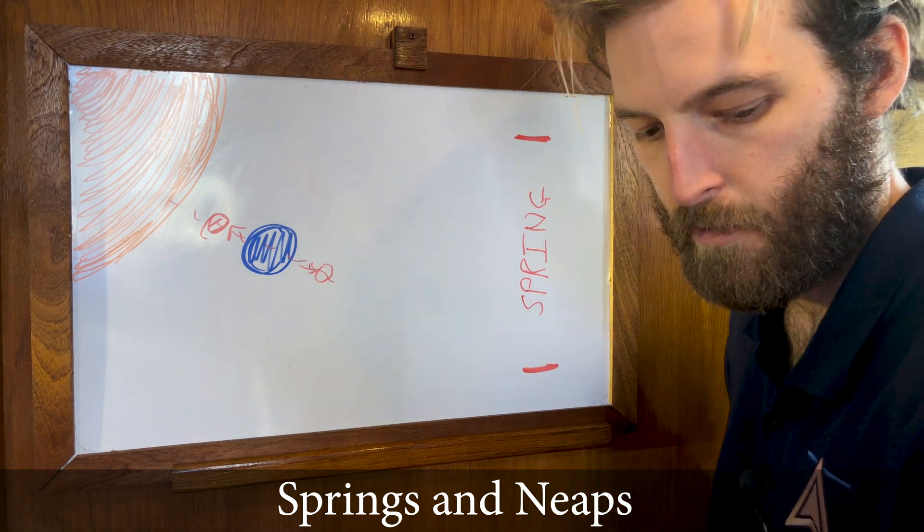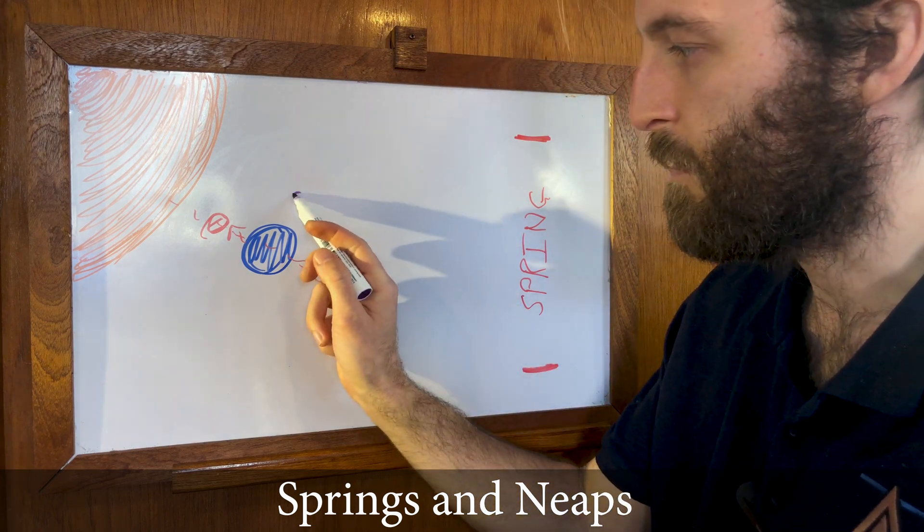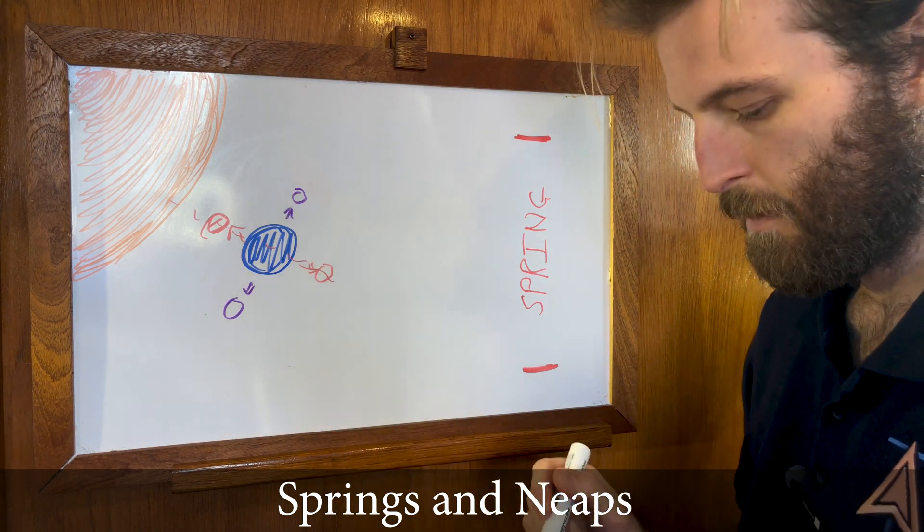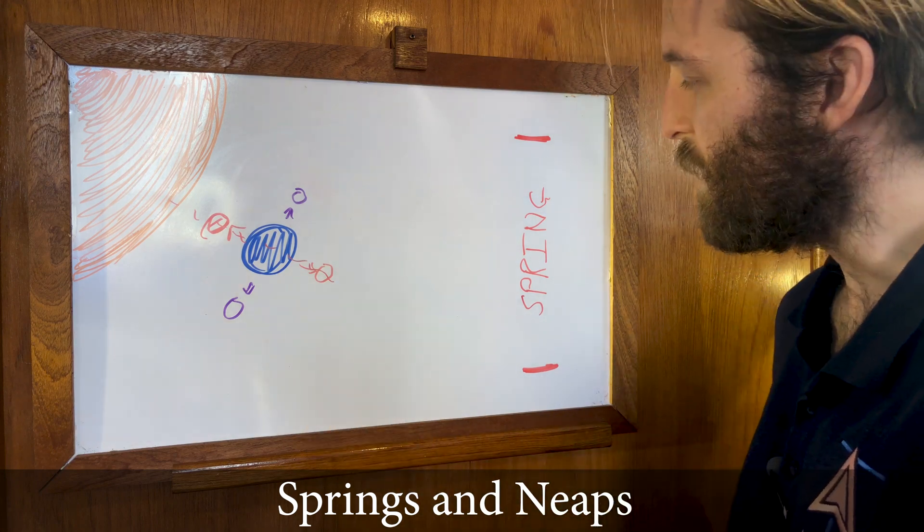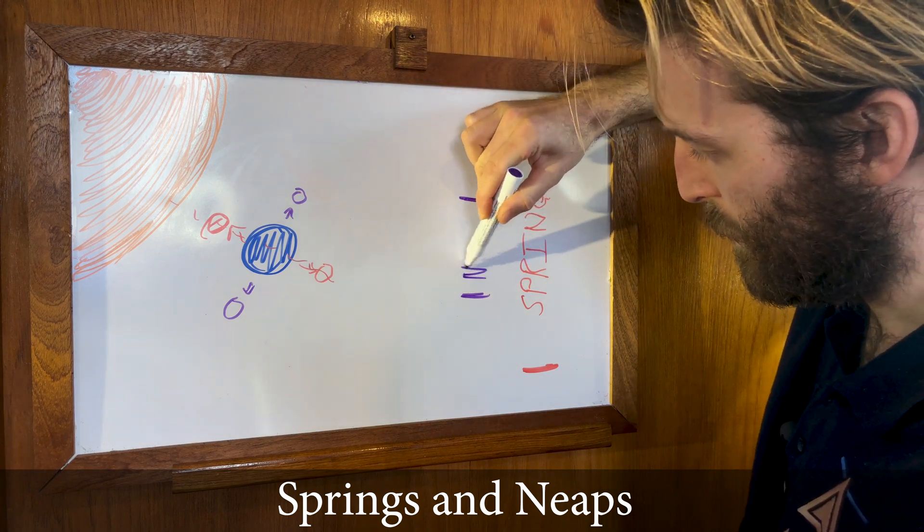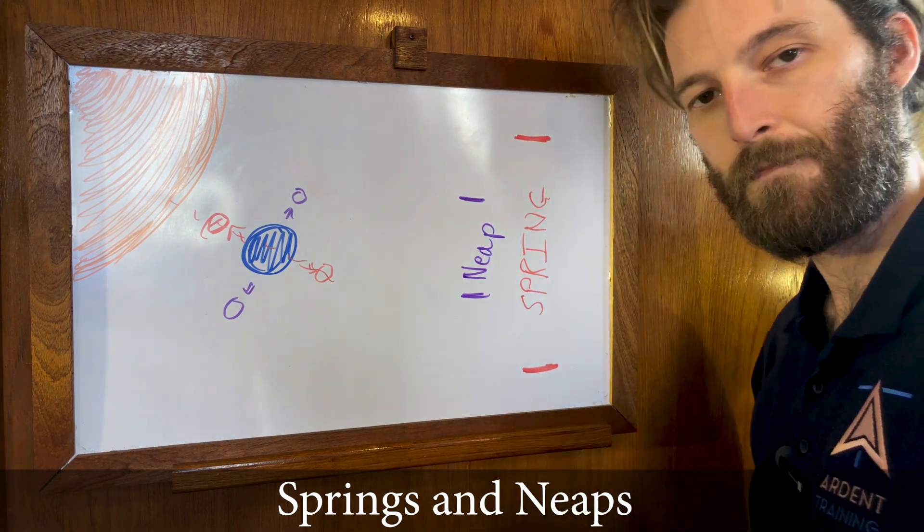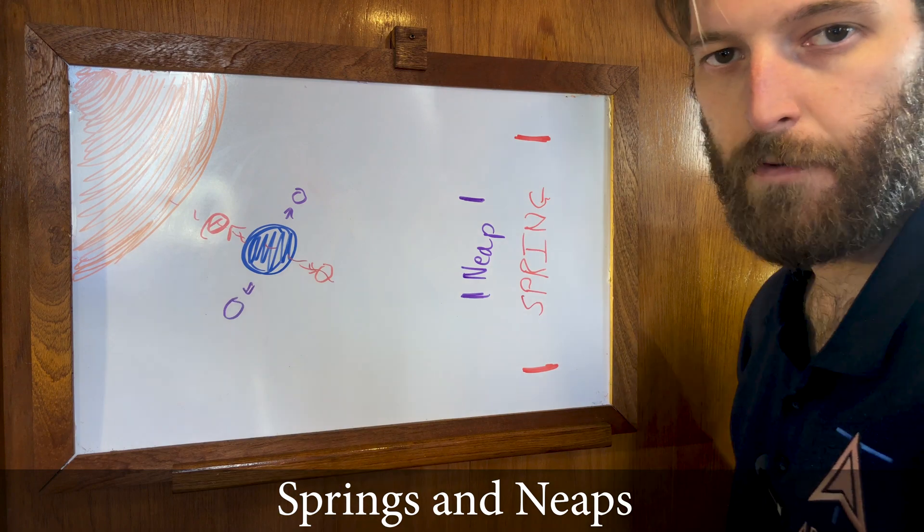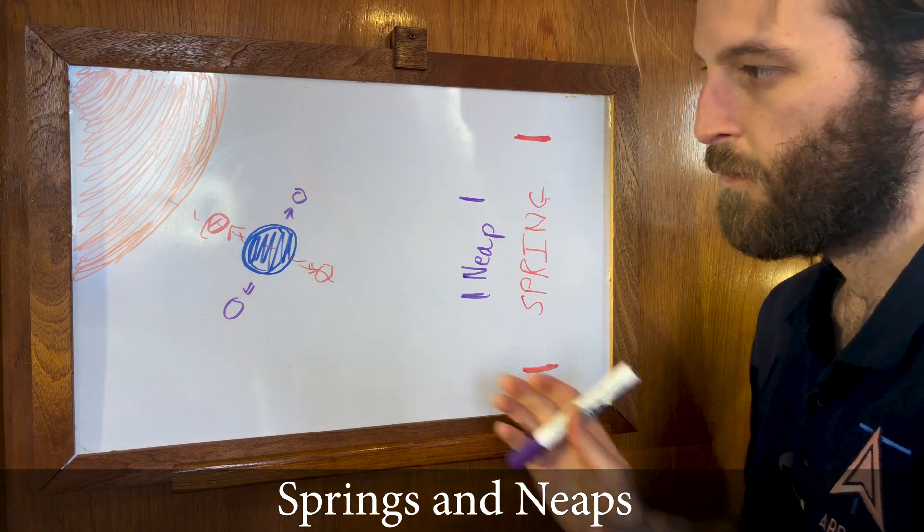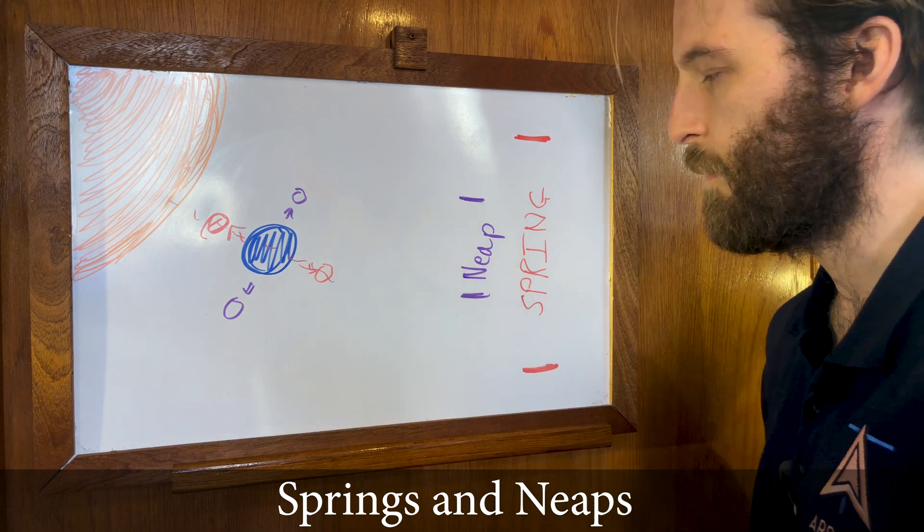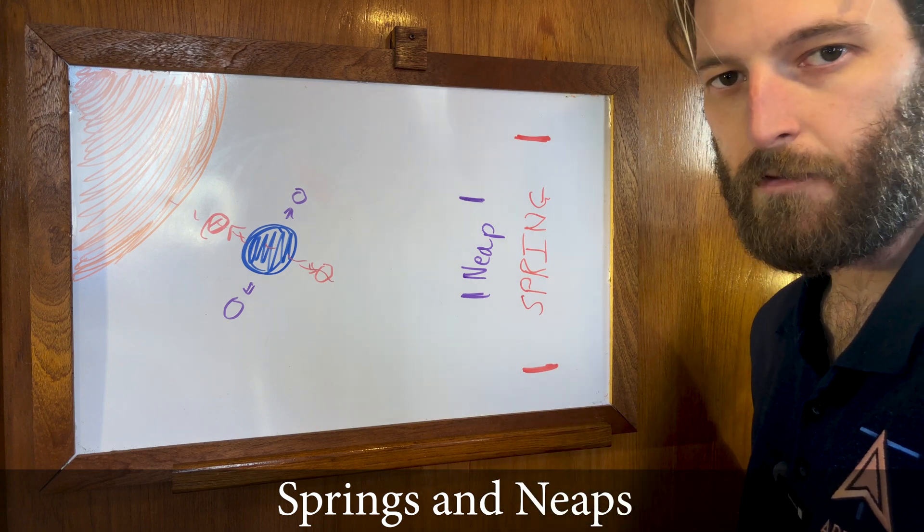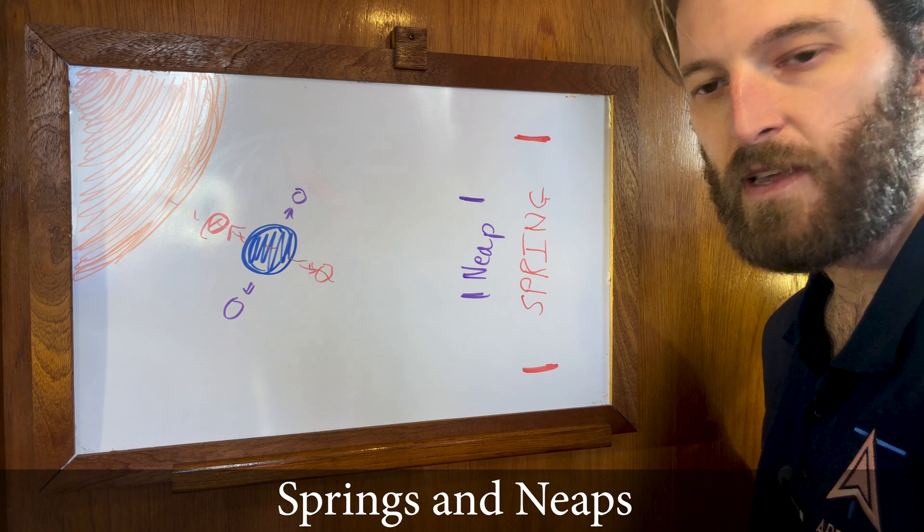Now conversely, if the moon is at 90 degrees to the sun and they are fighting against each other, so either here or here, then our low tides will be much higher and our high tides will be much lower. And these are neap tides. So springs: full moon, new moon, high highs, low lows. Neaps: 90 degrees off, so we're getting a half moon, and we have high low tides and low high tides. So hopefully you can see why this will become quite significant to us - how much the sea level is rising and falling.